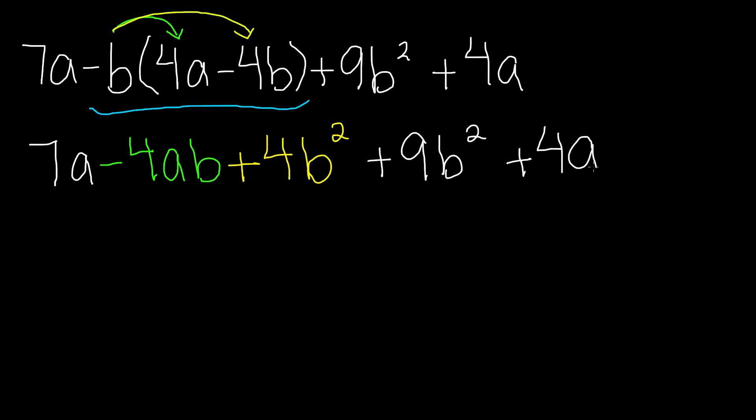Second step is to find the like terms and add or subtract them. So, our first like terms are 7a and 4a. Why are they like terms? Well, because like terms are terms that have the same variable and the same power of that variable. So, a doesn't have a power, so the power is going to be 1. In the same way, 4a, a is the same variable, and it has the same power, which is 1. So, 7a and 4a make 11a, and then now you copy down the term, which is negative 4ab.